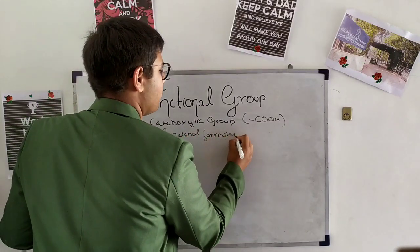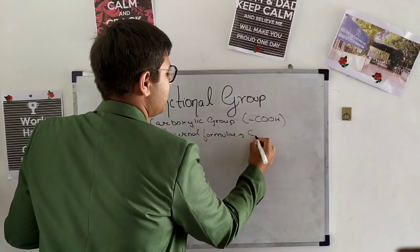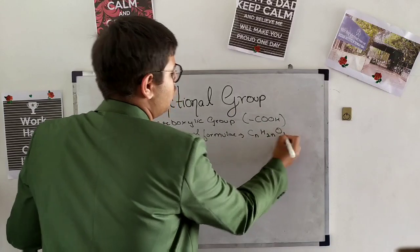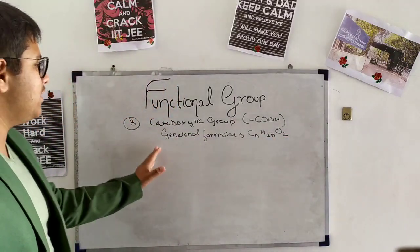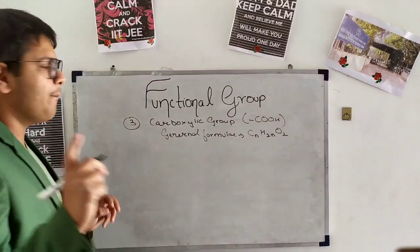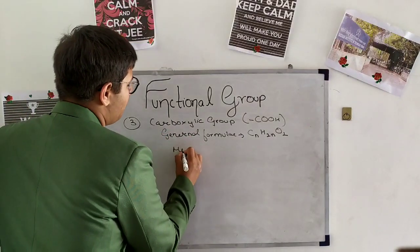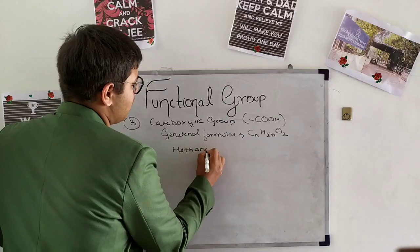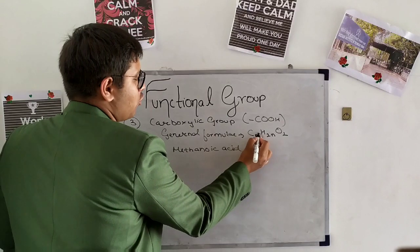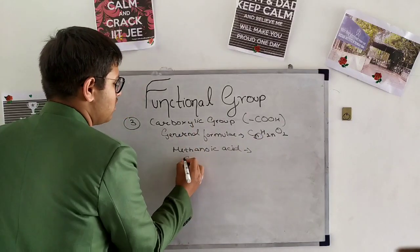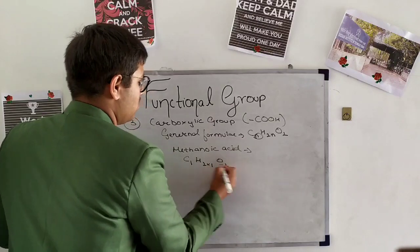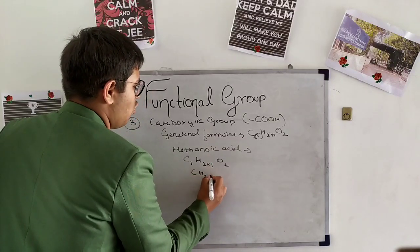Now this is the general formula. Let us make the first carboxylic group compound, that is methanoic acid. As we know that methanoic contains one carbon, so at the place of n we will write 1, so C1H2 into 1 O2, which gives CH2O2.